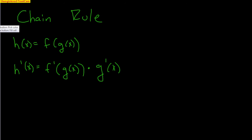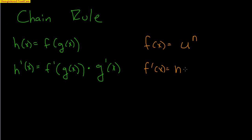A much easier way of writing this: if you have a function u to the n, where u is not necessarily just x — we're used to doing the power rule, which is x to the n — but if x is something more complex, just call it u. The derivative would be n times u to the n minus 1, times the derivative of u. It seems confusing, but once you start working with this rule a lot, you'll realize how simple it is.